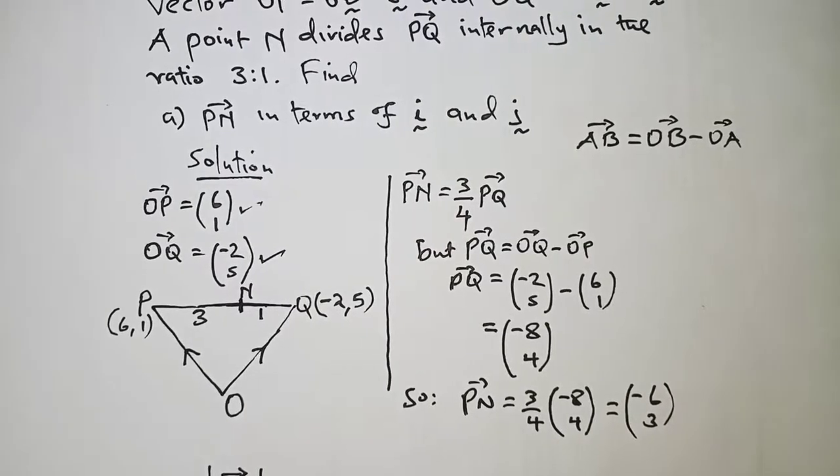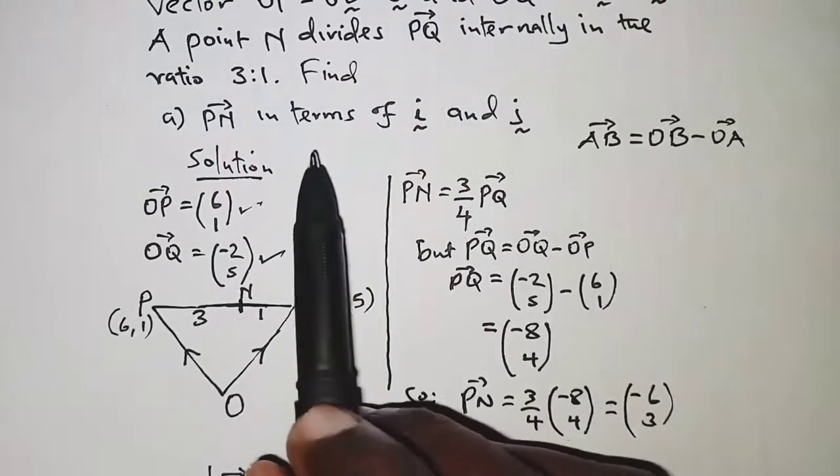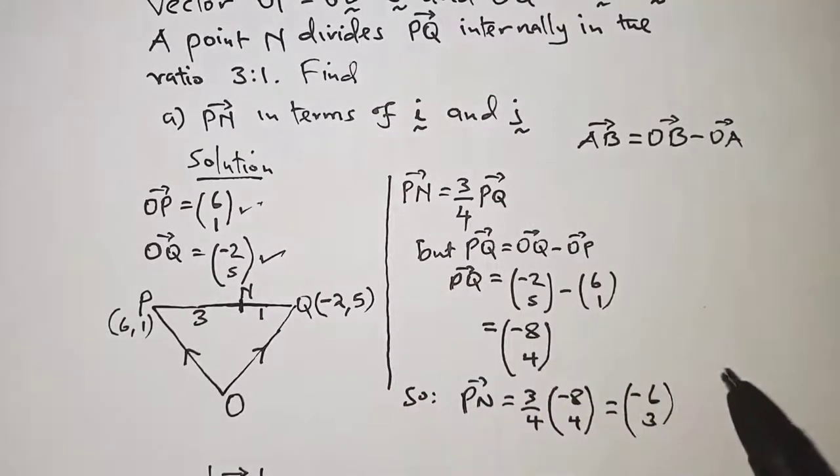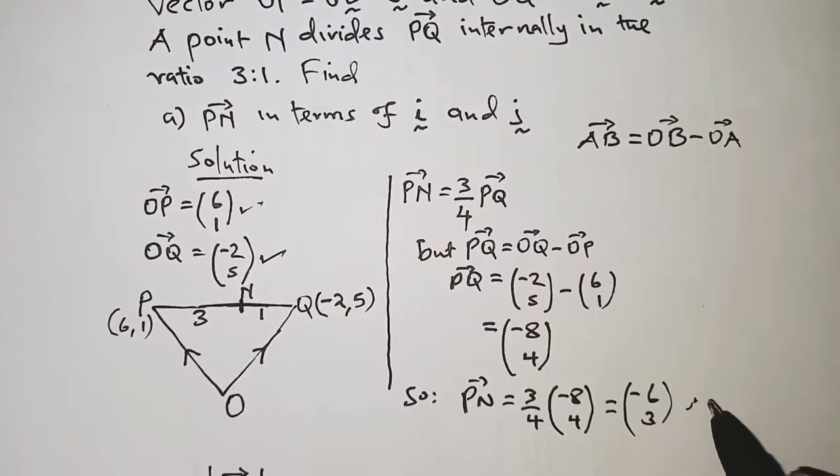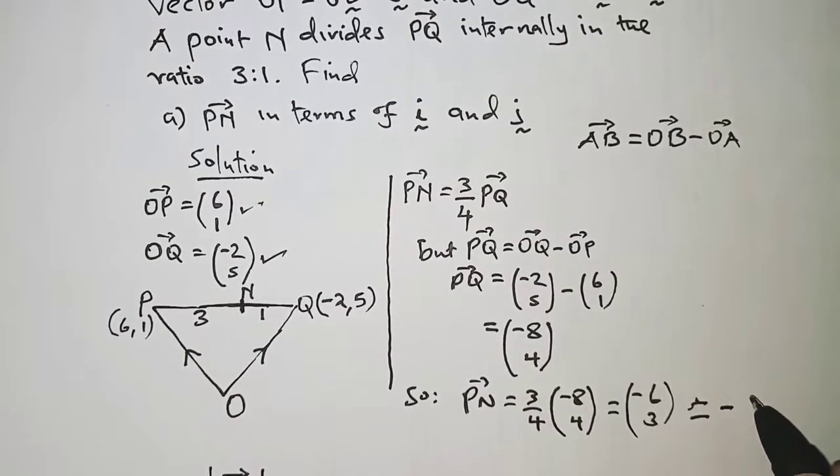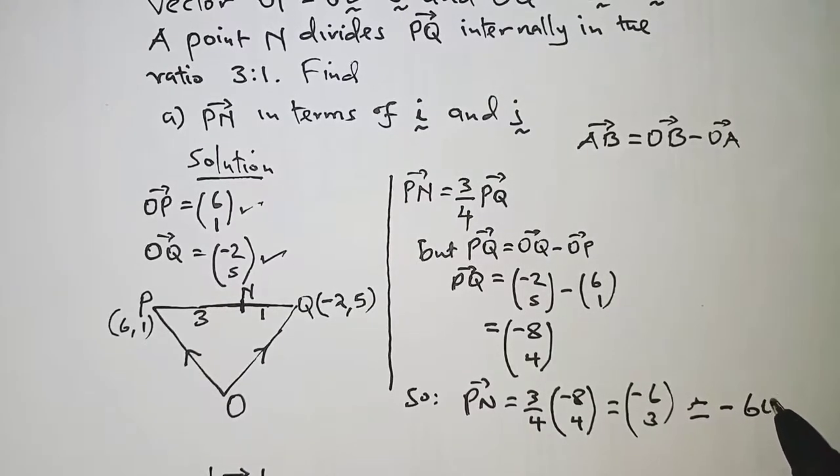But remember, we're told to give our result in terms of i and j. So this column vector can also be written as -6i plus 3j.